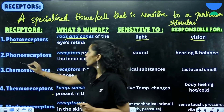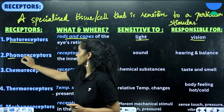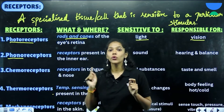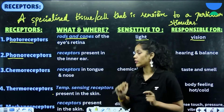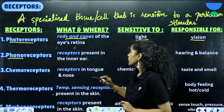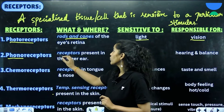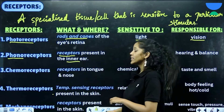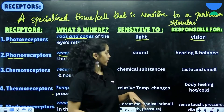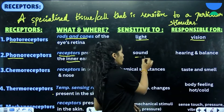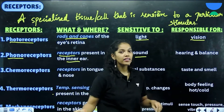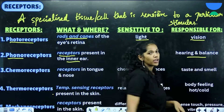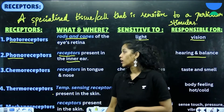Speaking of phonoreceptors — 'phono' is associated with your ear and hearing. Phonoreceptors are present in your inner ear. They are sensitive to sound and are responsible for hearing and balance.